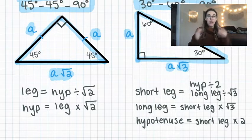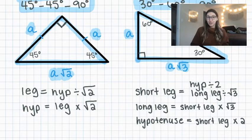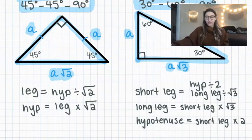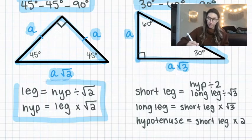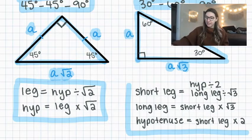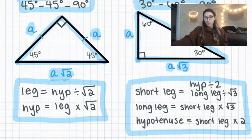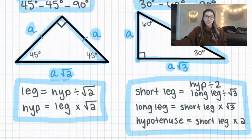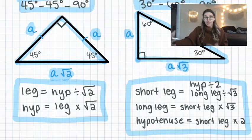We have these shortcuts, and they are going to be very important. Every teacher teaches this differently — this is how I've chosen to explain it. We have our 45-45-90 shortcuts, which you may want to write down, and our 30-60-90 shortcuts, which you also may want to write down, because they tell you how to find each missing side depending on what information you're given.